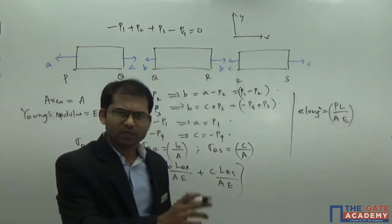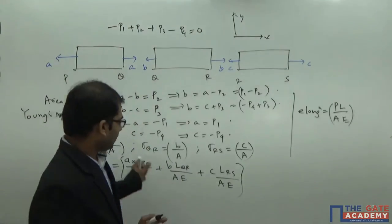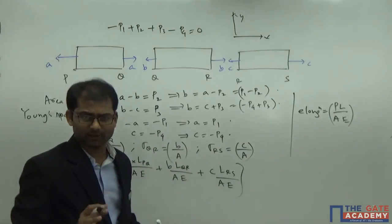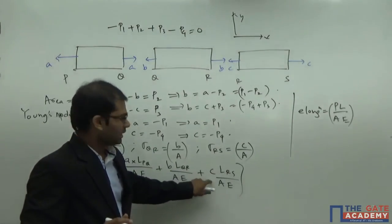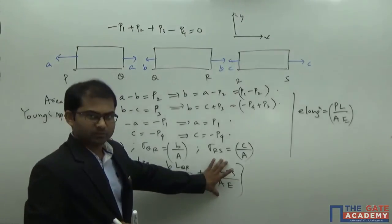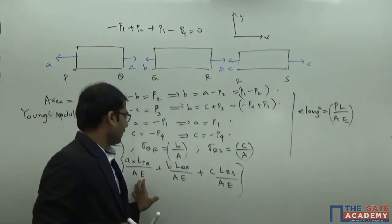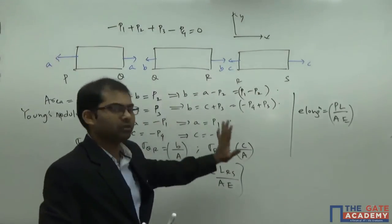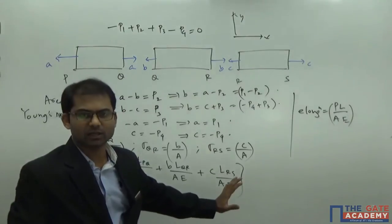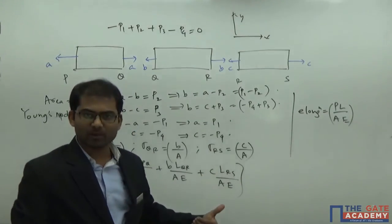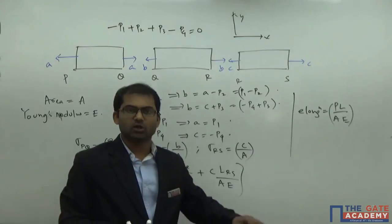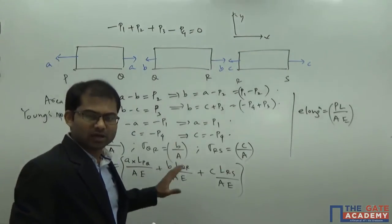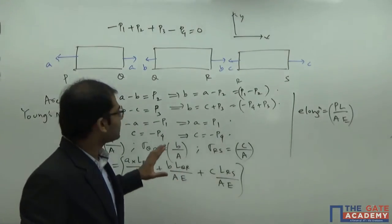We must always consider the sign of the force. If you neglect the sign of the force, that will definitely give a wrong answer. If C is a compressive force, that part will be compression, so we subtract the elongation of RS from those of PQ and QR. We have to add them algebraically, considering the sign of the force at any cost to get the exact value.